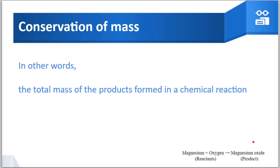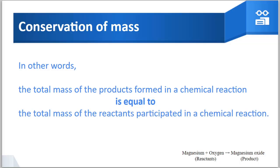In other words, the total mass of the products formed in a chemical reaction is equal to the total mass of the reactants that participated in the reaction — both sides should be equal. That is the law of conservation of mass studied in Class 9. In this video, we have learned about balanced and unbalanced chemical equations and the law of conservation of mass. Thank you.